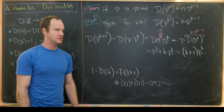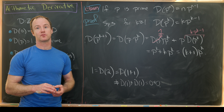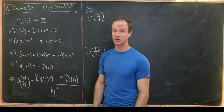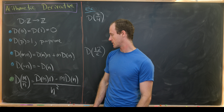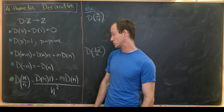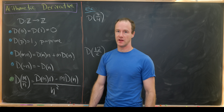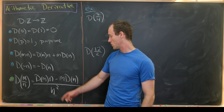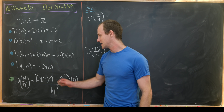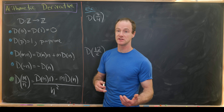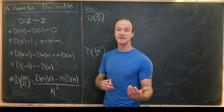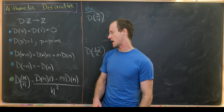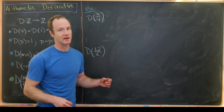Now let's extend this arithmetic derivative to the rational numbers. We can do that with something that looks a lot like the quotient rule: d(m/n) equals (d(m)·n − m·d(n)) divided by n squared. One might worry that rational numbers don't have a unique expression, but we'll see that regardless of the representation we get the same value.